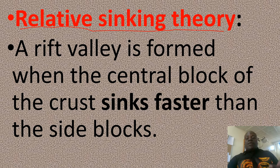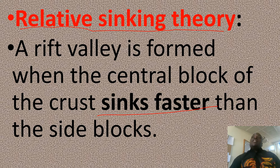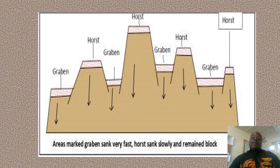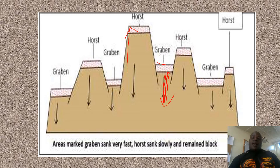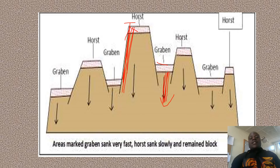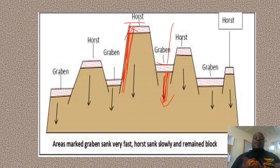This is the opposite of differential uplift theory. Here, the central block — the central part of the axial crust — sinks faster than the side blocks, and this leaves a depression at the center called a rift valley. If you check on this diagram, these central blocks had to sink faster than the neighboring blocks at the sides. And the ones that remain at the sides, where sinking was low, form horsts — one can even call them block mountains. And the other part of the crust where the block had to sink faster forms a depression called a rift valley or a graben.